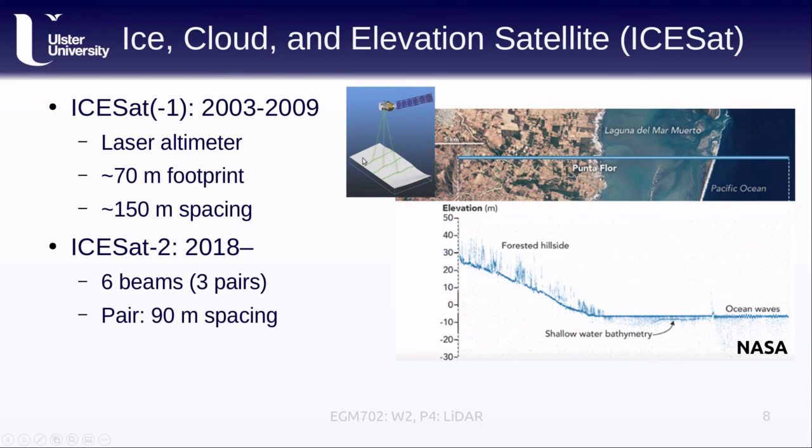So we see a lot more variation in the cross-track direction, but in the along-track direction, instead of a measurement every 150 meters or so, we're getting a measurement every about 70 centimeters.